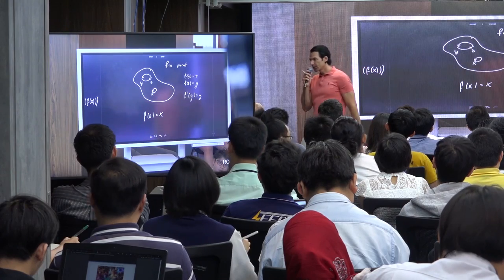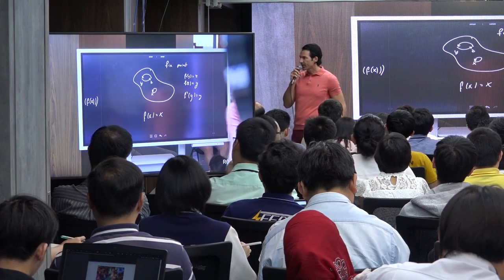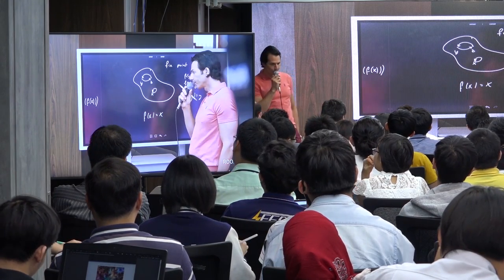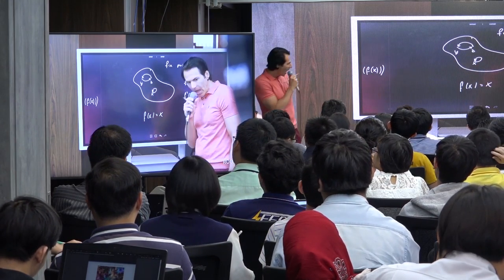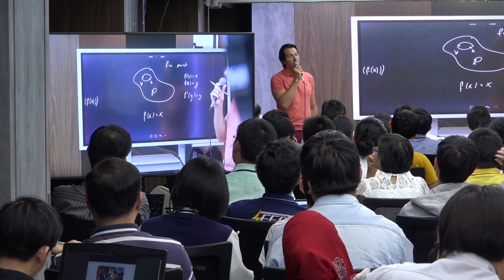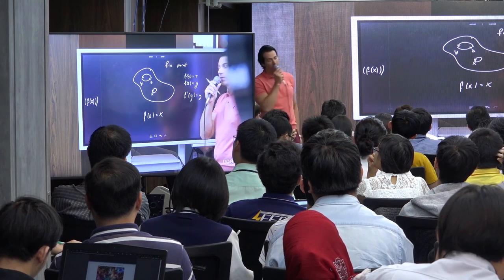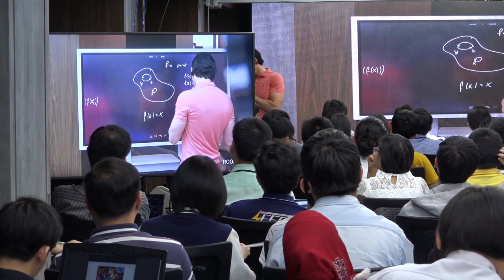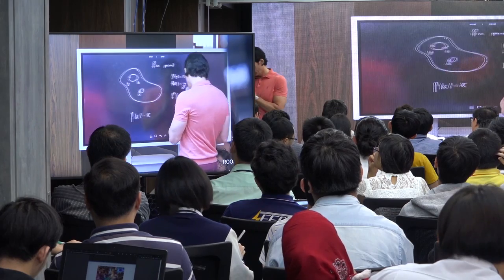Two very important notions in dynamical systems: fixed point and periodic point. And I think we should do some examples now, because I've been very abstract so far.